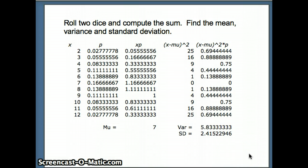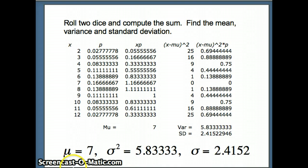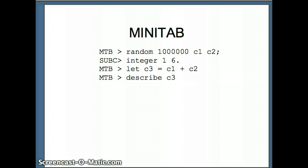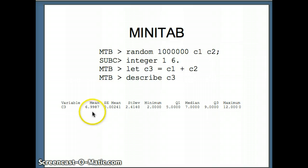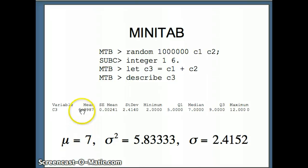Solving a problem like this is certainly best done using a spreadsheet like Excel. Our theoretical solutions are: mu = 7, variance = 5.833, and standard deviation = 2.4152. We check these on Minitab using 1 million numbers each in C1 and C2 drawn from the integer 1-through-6 family to simulate rolling dice. Setting C3 equal to C1 plus C2 gives the sum, and describing C3 shows x-bar of 6.9987 and standard deviation of 2.414 — very close to our theoretical solutions.